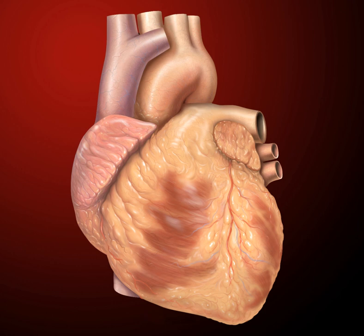Other defects include those affecting the heart valves, e.g. congenital aortic stenosis, or the main blood vessels that lead from the heart, e.g. coarctation of the aorta. More complex syndromes affect more than one part of the heart, e.g. tetralogy of Fallot. Some congenital heart defects allow blood that is low in oxygen to be pumped back to the rest of the body instead of the lungs; these are known as cyanotic congenital heart defects and are often more serious.